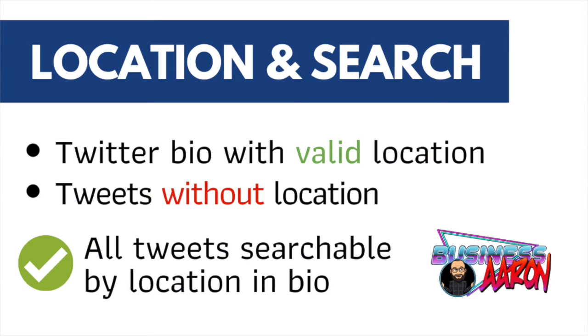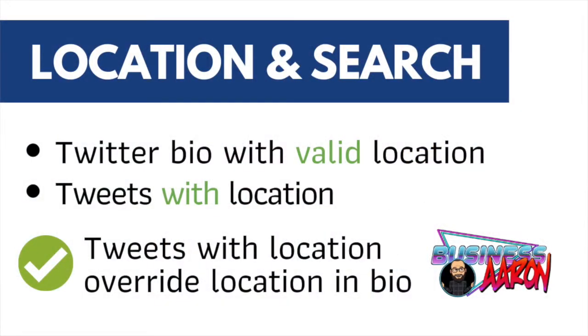If you have a location in your bio the way I have Toronto in my bio, then if somebody is searching for tweets in Toronto, all of my tweets will come up unless I decide to put a location in individual tweets. For example, if I go on vacation to Los Angeles and put the Los Angeles location tag in my tweets, that's going to override the Toronto tag in my bio without affecting the rest of my tweets.